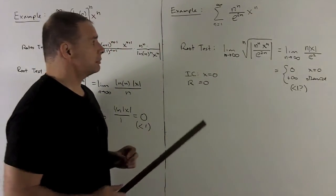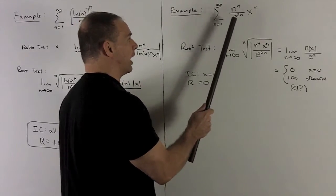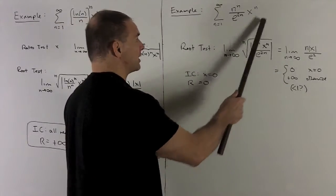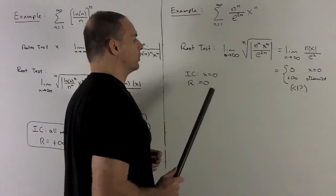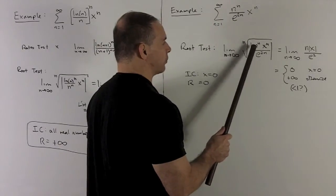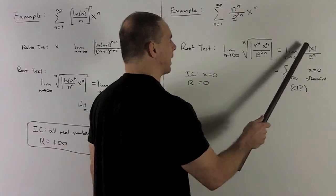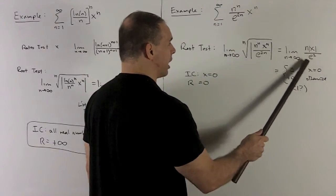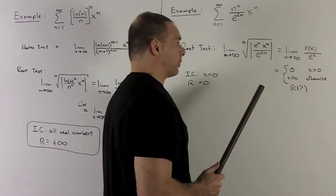Next example: the sum from n=1 to infinity of n to the n over e to the 2n, times x to the n. Same procedure — put our sequence element in absolute values and take the nth root, then take the limit as n goes to infinity. Taking the nth root just peels off all the n's, leaving us with n times |x| over e squared. E is roughly 2.7, so there's no point keeping the absolute value on that either, since e is a positive number.